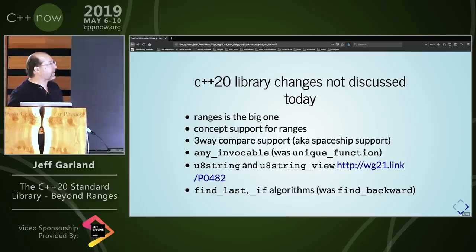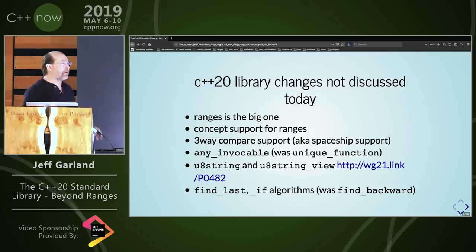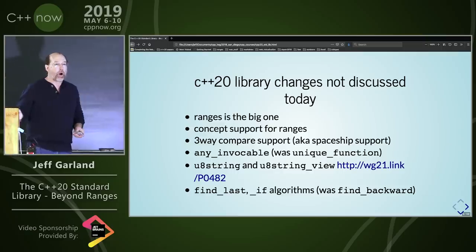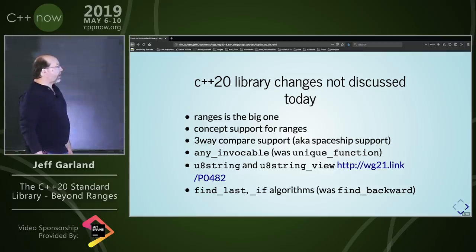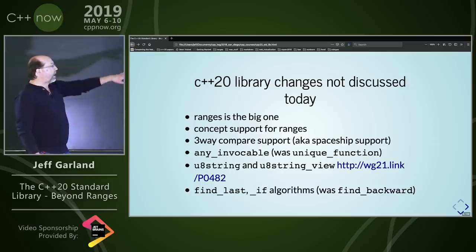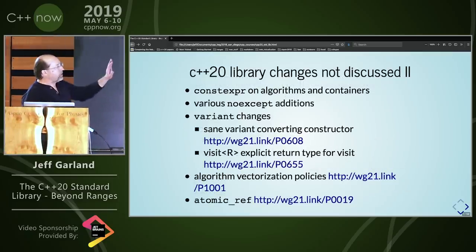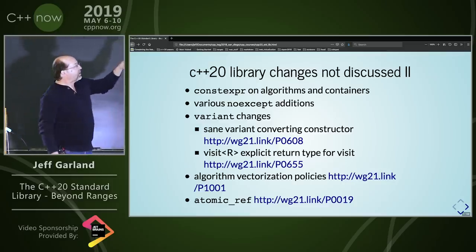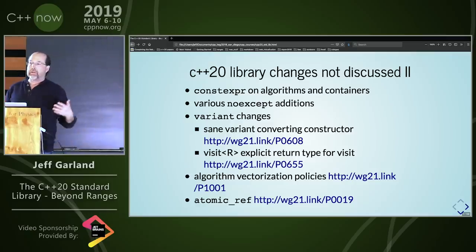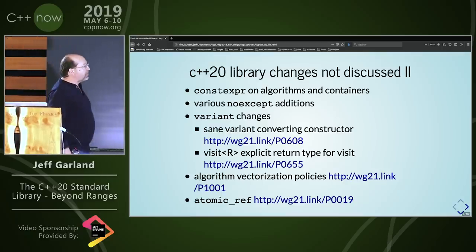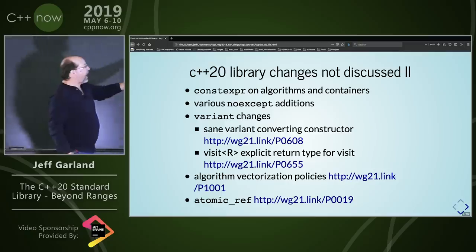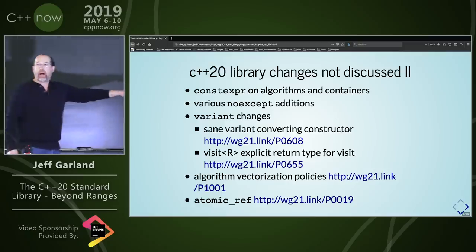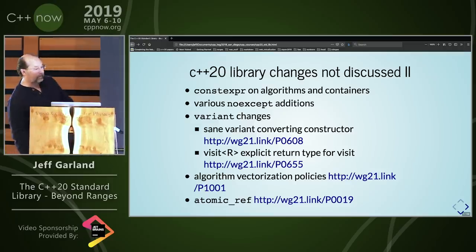As I said, and as obvious from the title, the big thing we're not talking about is ranges. Ranges is a huge change to the library — it's a complete overhaul of the algorithms. I have a talk on that tomorrow. There are also smaller things I chose to take off the list: three-way compare support, any invokable (also called unique function), U8 string and string view, constexpr — there's a ton of new constexpr in various algorithms and containers this year — noexcept additions, variant algorithm vectorization, and atomic ref.